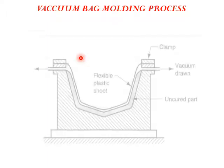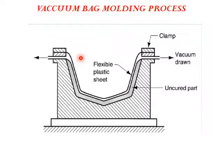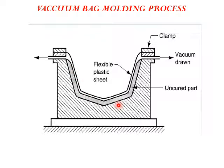Looking at the first method, the bag molding process — the end product resembles the shape of the mold. The mold is covered with a gel coat, which, as discussed in the hand layup process, facilitates easy removal of the end product. Once the gel coat is applied, fibers impregnated with the resin are placed over it. You can place a layer of resin, then a layer of fiber, then resin again — like a sandwich.